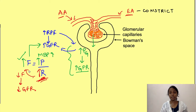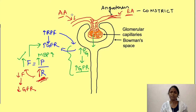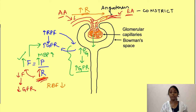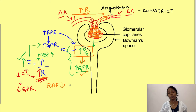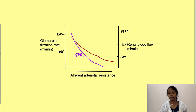Now consider efferent arteriole constriction, which is caused by angiotensin acting more on the efferent arterioles. Efferent constriction increases vascular resistance and decreases renal blood flow. However, because it affects the outflow from the glomerular capillaries, more blood is retained in them, which increases glomerular hydrostatic pressure and raises GFR. So renal blood flow and GFR are affected independently by changes in arteriolar resistance.